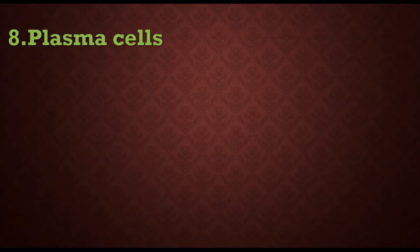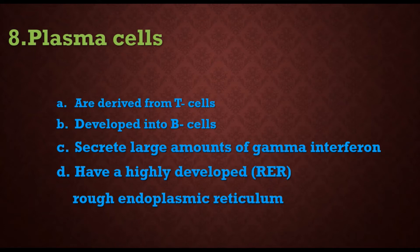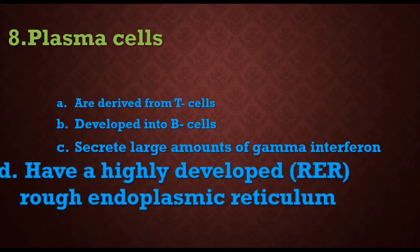Eighth question: plasma cells — are they a) derived from T cells, b) developed into B cells, c) secrete large amounts of gamma interferon, or d) have a highly developed rough endoplasmic reticulum? Plasma cells are not derived from T cells, they are not developed into B cells (rather they develop from B cells), and they do not secrete gamma interferon. So the answer is d) they have a highly developed rough endoplasmic reticulum.